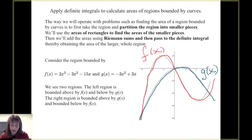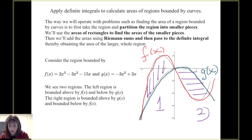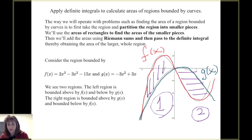We see in this graph that there are two regions bounded by the curves. There's region 1 on the left and region 2 on the right. The left region is bounded above by f of x and bounded below by g of x. Region 2, the region on the right, is bounded above by g of x and below by f of x. This is going to influence how we use the definite integral to find the areas of these regions.